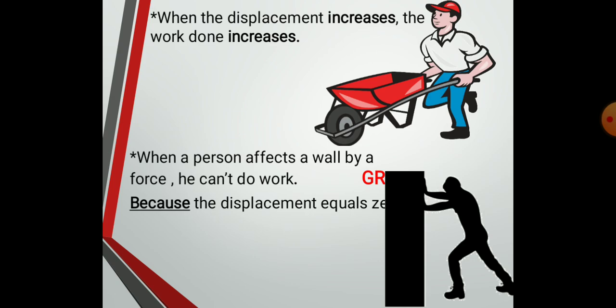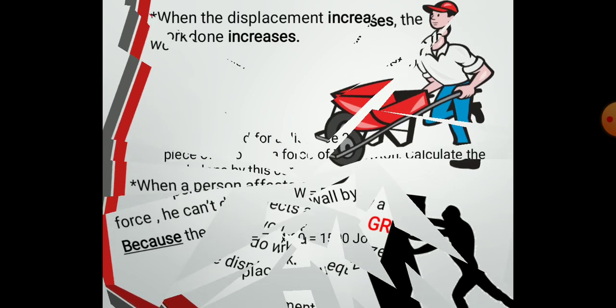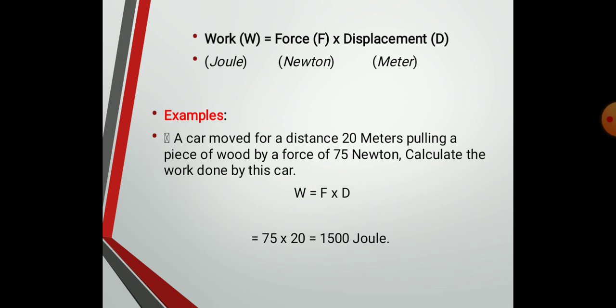When the displacement increases, the work done increases. When the person affects a wall by force, he cannot do work — give reason — because the displacement equals zero. For example, a car moved a distance of 20 meters pulling a piece of wood by a force of 75 Newton. Calculate the work done by this car. W equals F times D equals 75 times 20 equals 1500 joules.